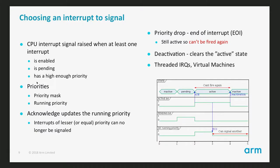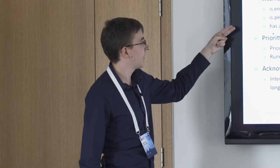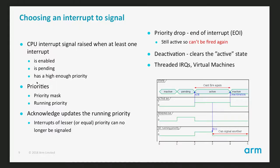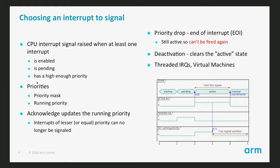Now, how exactly do we decide to interrupt a CPU? The exact conditions are that an interrupt must be enabled, in a pending state, and have a high enough priority. Each interrupt can be given a programmable priority. At each CPU interface we can program a priority mask so that interrupts of a given priority will be masked and never signaled to the CPU.